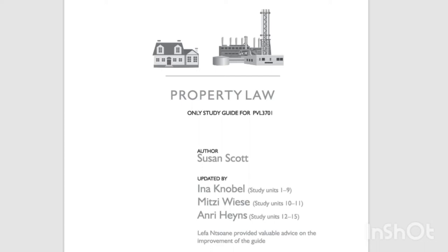A real remedy therefore finds application in lawful and unlawful relationships. Various remedies are used in the law of things to fulfill different functions. First, in the case of real rights, remedies serve to maintain, protect or restore the real rights concerned. But secondly, there are also remedies governing the legal consequences of unlawful real relationships — for example, the spoliation remedy. See Study Unit 9 on the Protection of Possession and Holdership.